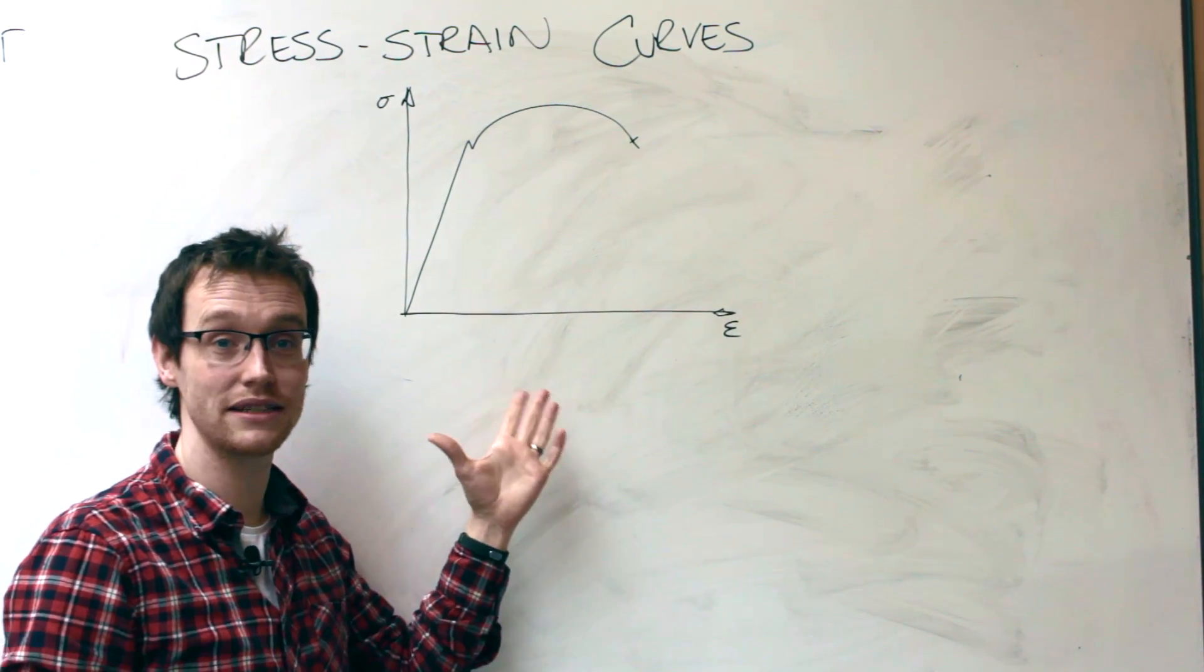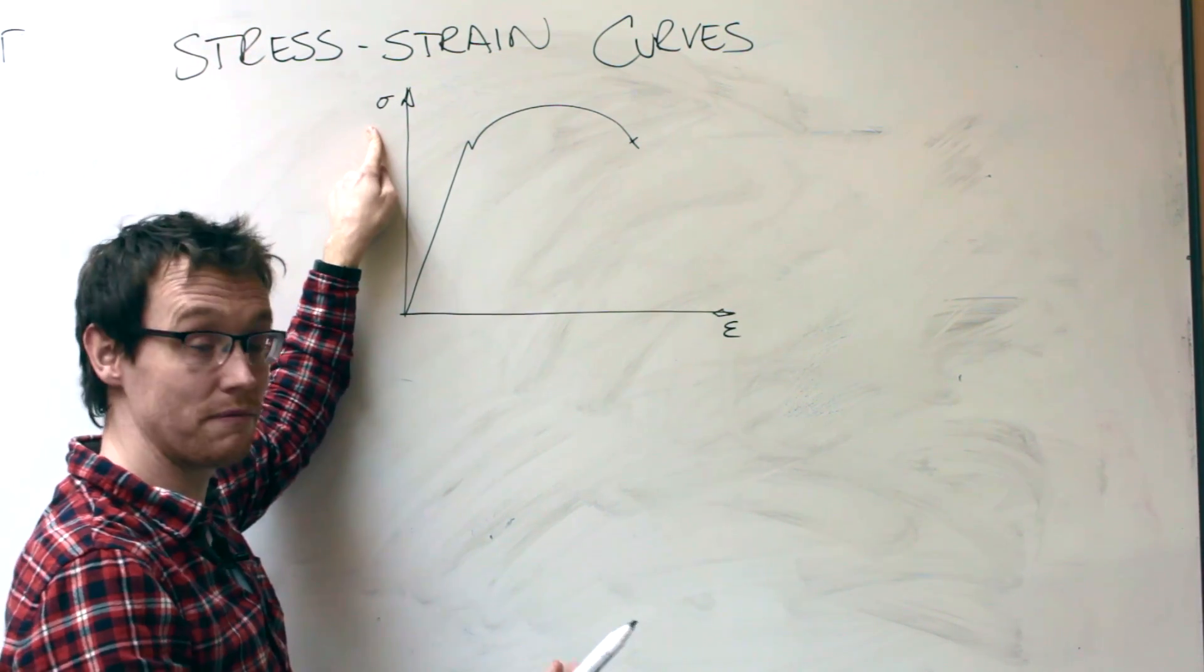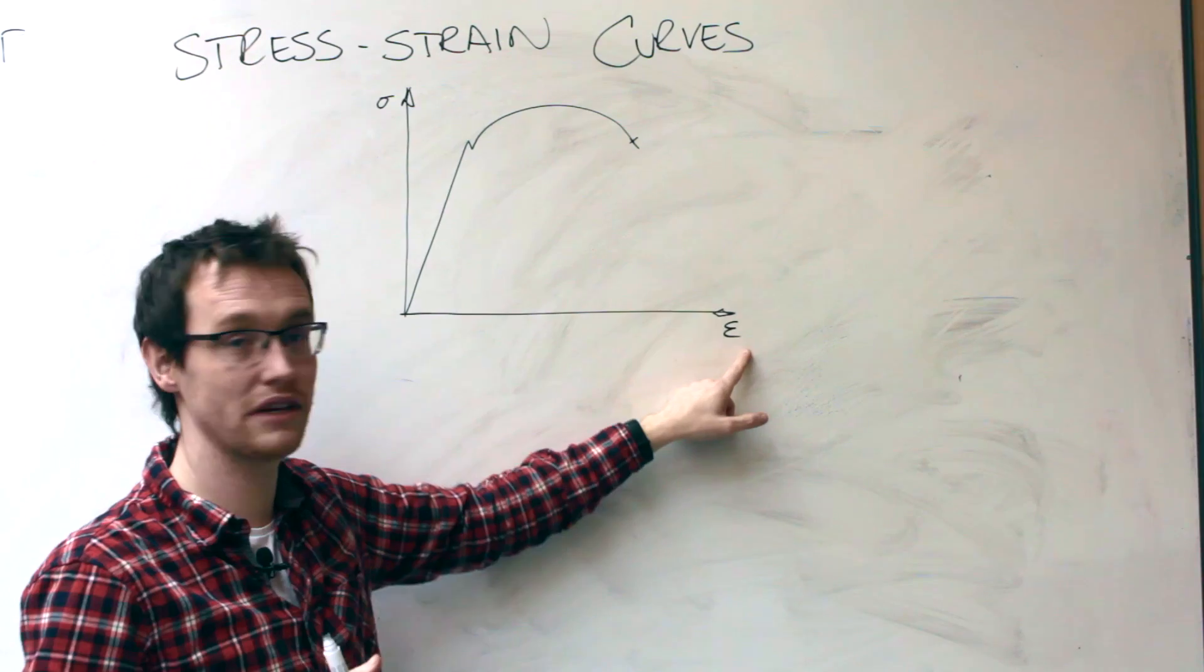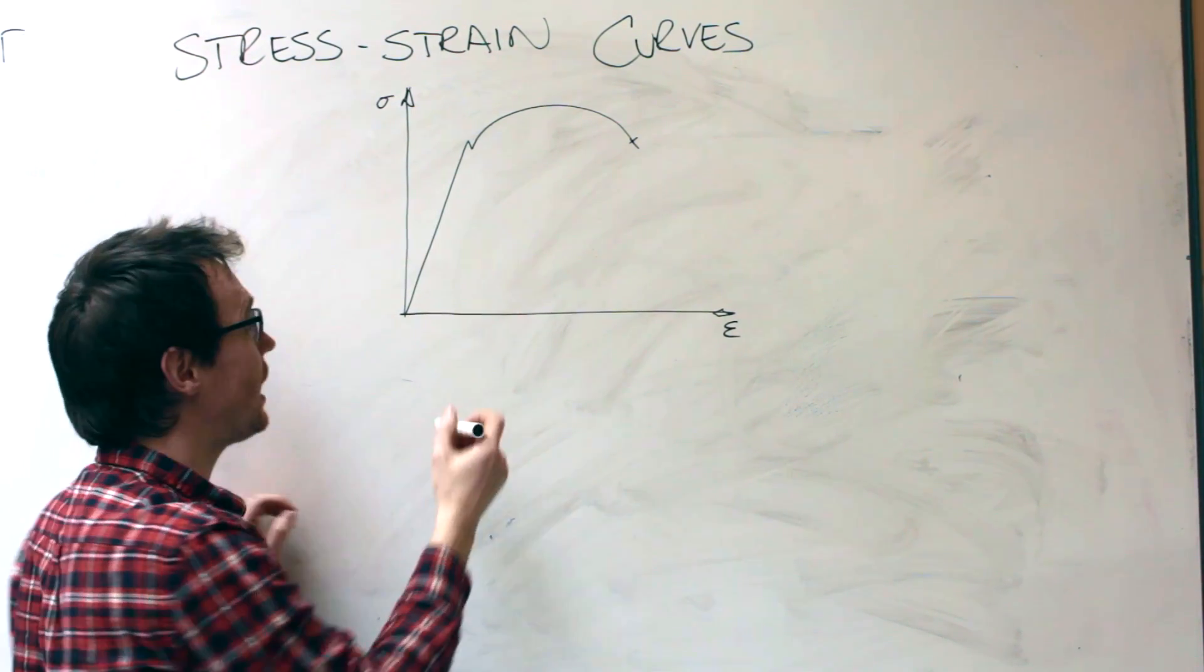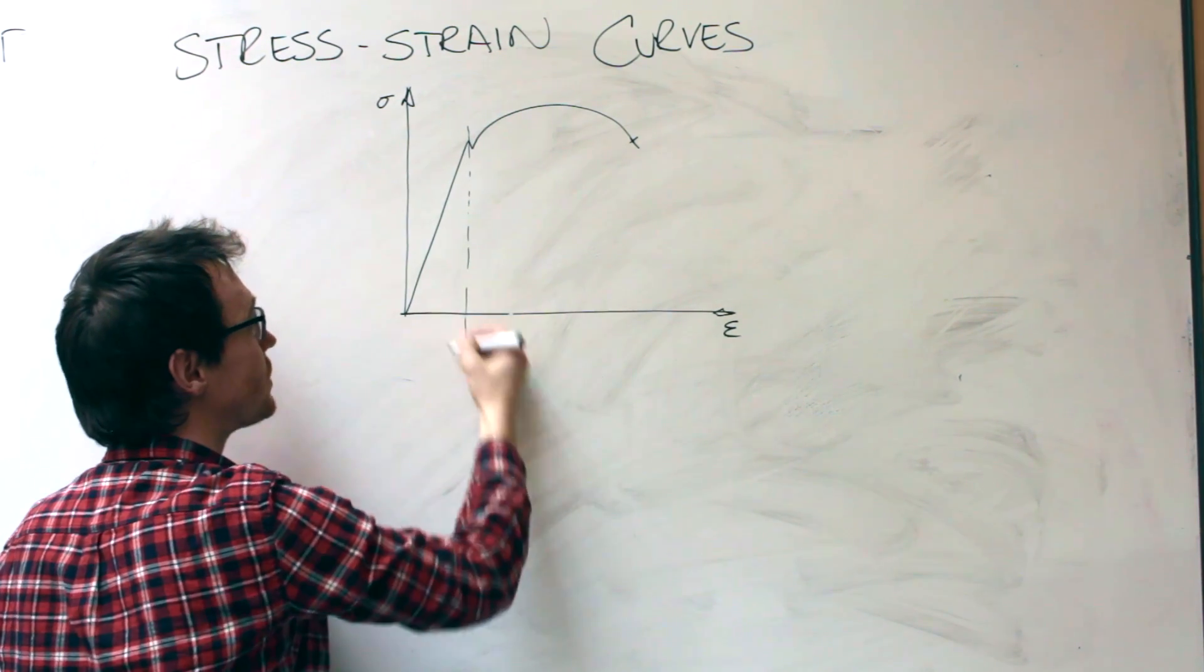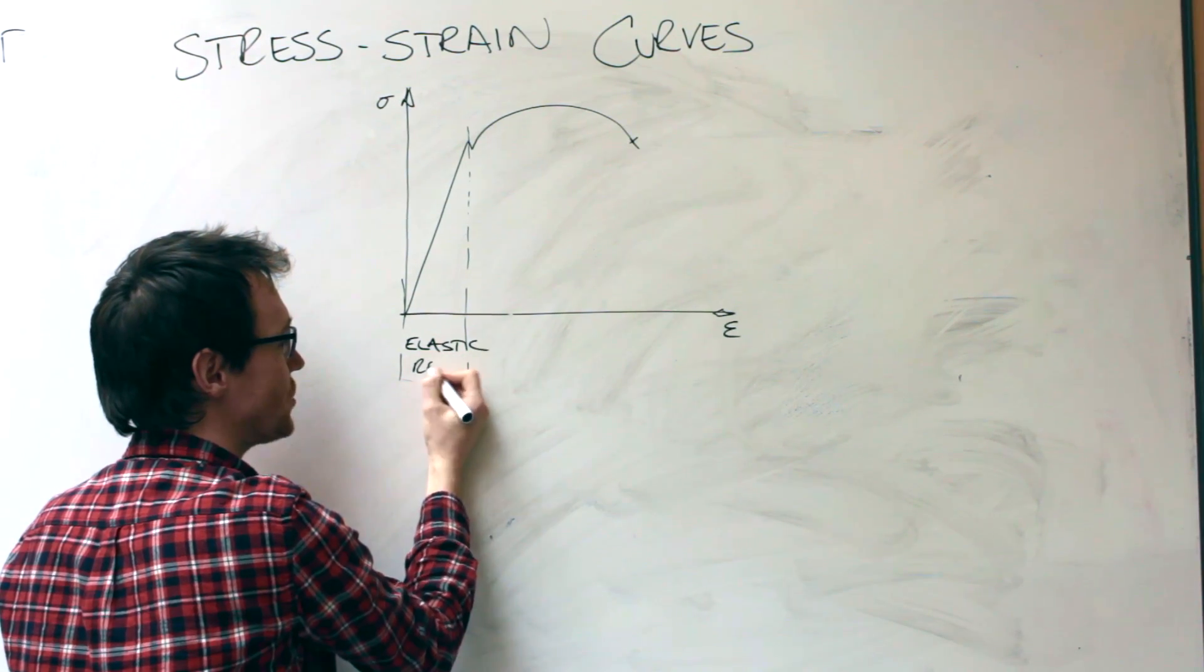So let's take a look what all these things mean. First off, just remember this is effectively how much force you're stretching with, and this is how much the thing has stretched. So the first part of the graph is known as the elastic region.